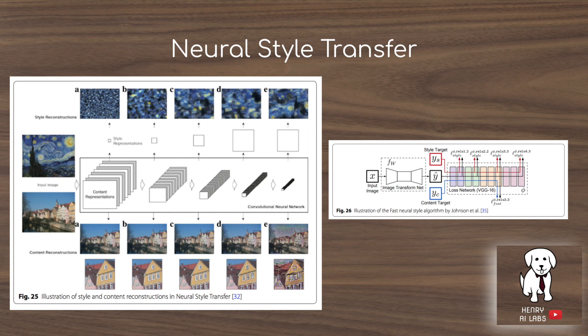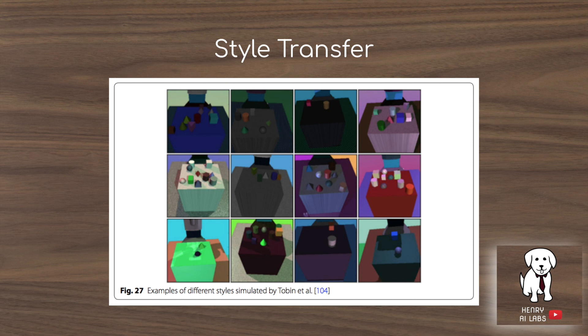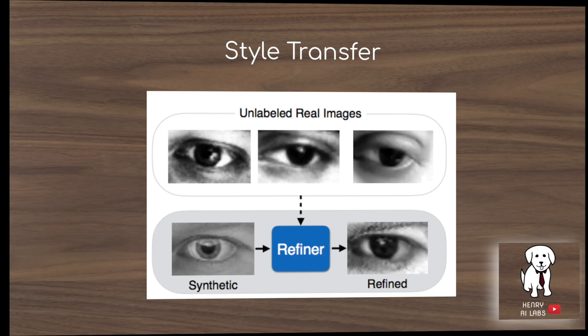Another data augmentation that hasn't been explored too much is neural style transfer — using styles to augment images in interesting, semantic ways that go beyond just color transformations. Style transfer has been really successful in robotic applications, such as a study from UC Berkeley where they randomize colors in simulation so that when the robot goes to the real world, it generalizes because it sees the color transformation as just another color set in its diverse training dataset.